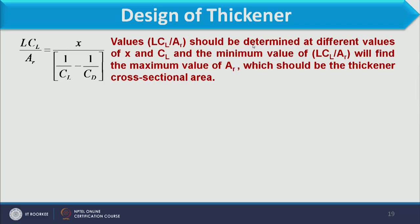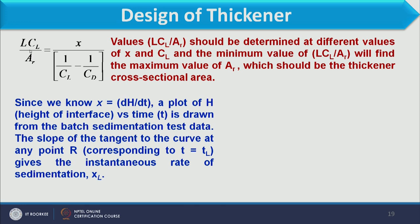The values of LC_L/A_R are determined at different values of X and C_L. The minimum value of LC_L/A_R gives the maximum value of A_R, which is the required thickener cross-sectional area. There are two variables: X (sedimentation velocity, which varies with the layer) and C_L (concentration of the capacity-limiting layer, which changes from top to bottom), while C_D remains constant.